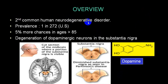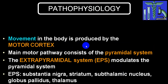Parkinson's disease is mainly a neurodegenerative disorder affecting dopaminergic neurons in substantia nigra. The dopaminergic neurons undergo degeneration and there is a deficiency of dopamine. Among the basal ganglia, substantia nigra is the most commonly affected structure. Movement in the body is produced by the motor cortex, but the main motor pathway consists of the pyramidal system. The extrapyramidal system modulates the pyramidal system. Among the extrapyramidal system, substantia nigra is the most important structure where maximum degeneration and dopamine deficiency occurs.